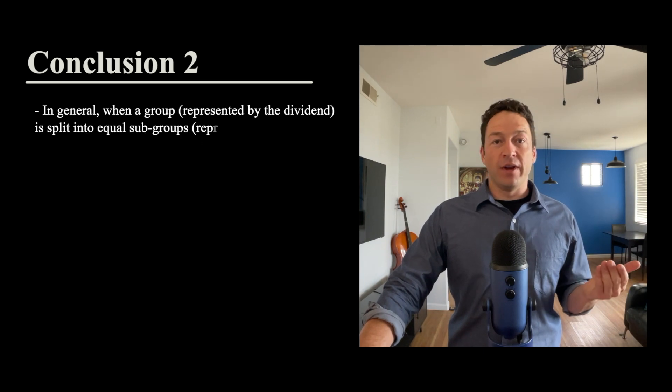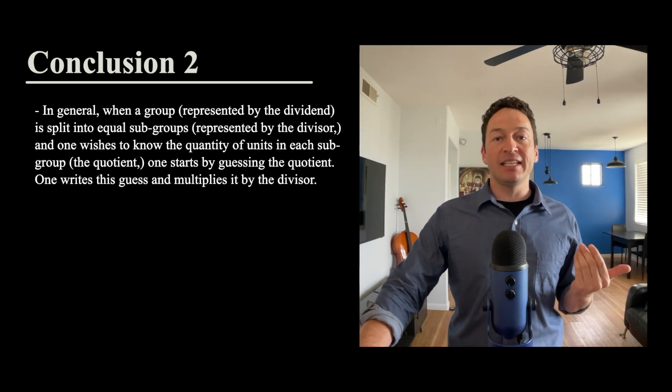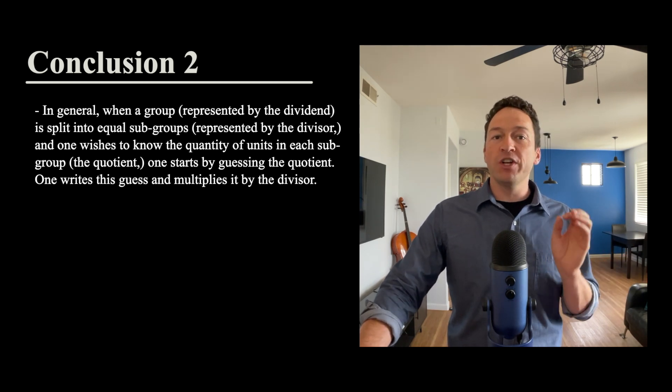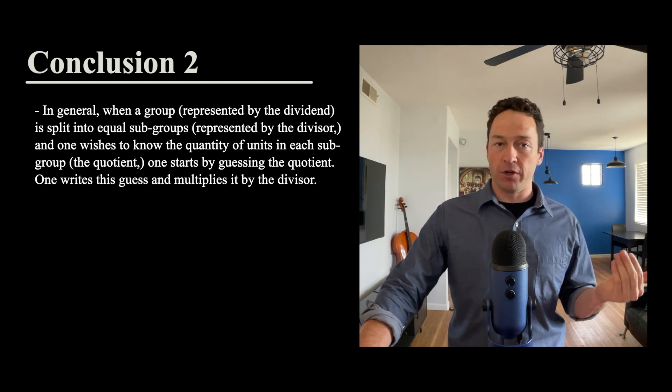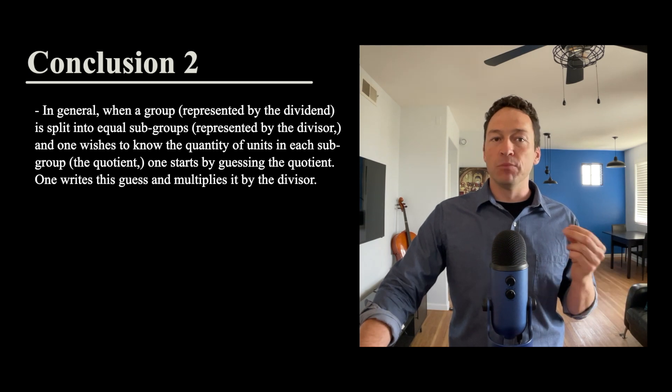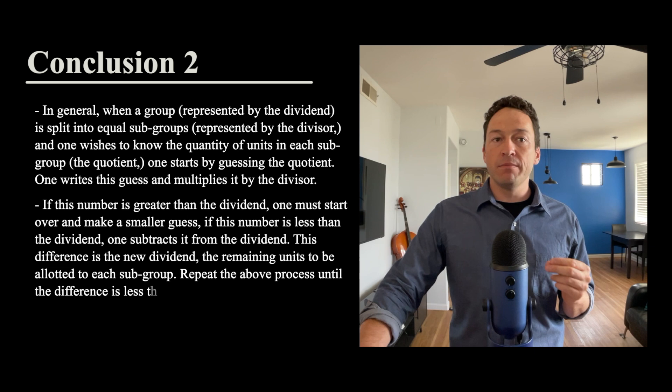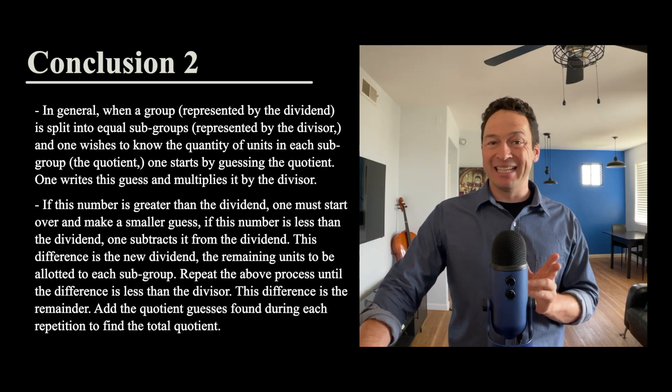In general, when a group represented by a dividend is split into equal subgroups represented by the divisor, and one wishes to know the quantity of units in each subgroup, which is called the quotient, one starts by guessing the quotient. One writes this guess and multiplies it by the divisor. If this number is greater than the dividend, one must start over and make a smaller guess. If this number is less than the dividend, which it was in all of our examples, one subtracts it from the dividend.